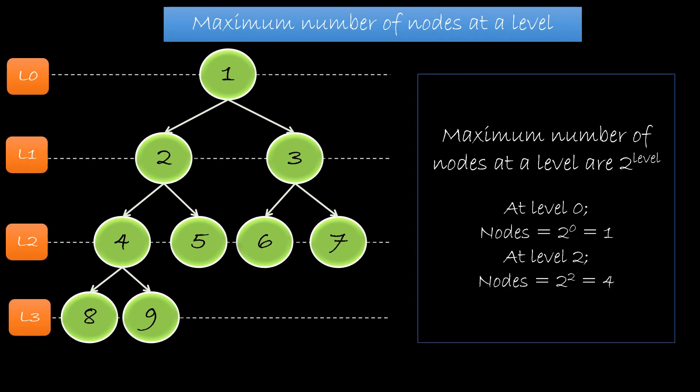Now, if I want to calculate the maximum number of nodes that can be at a level, it is given by 2 raised to the level. So at level 0, we have 2 raised to 0, that is 1 node. At level 1, we have 2 raised to 1, that is 2 nodes. Whereas at level 2, we have 2 squared, that is 4 nodes, and so on.